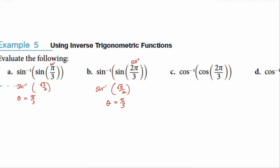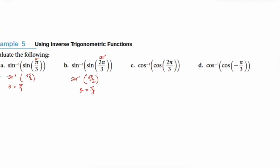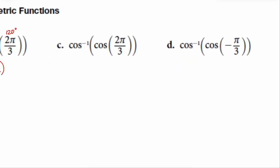The inverse sine can only find positive answers in the first quadrant and negative answers in the fourth. So even though the sine of 2π/3 is √3/2, when we reverse it, the answer we get has to come from the first quadrant — and that's π/3. For cosine: cosine of 2π/3 (120 degrees) gives negative 1/2. Negatives for the cosine are found in the second quadrant, so the answer reverses perfectly back to 2π/3.